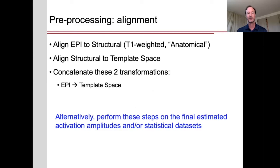Next, we want to generally align the data. First of all, the functional data, which is acquired in echo planar images, we want to align that to the structural data, typically a T1 weighted higher resolution image. And we also want to register that higher resolution image, that structural image to a template, particularly if we want to do group studies and we want to compare the activations across a group of individuals. So typically we align the EPI to the structural image, realign the structural image to the template space, and then it's best to concatenate these two transformations so that in the end we can do a single transformation from the EPI to the template space. An alternative would be to perform all of these steps on the final estimated activation amplitudes or statistical data sets.